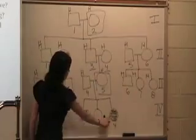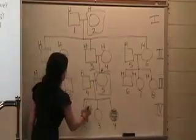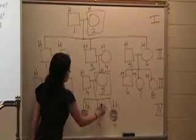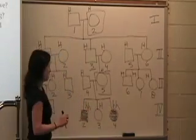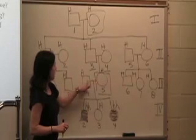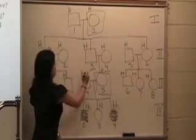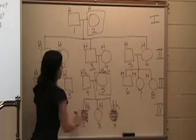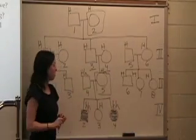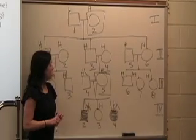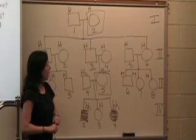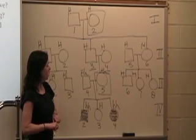Until we get to these two down here, which do display hitchhiker's thumb, so we know that they are homozygous recessive. If these two are homozygous recessive, we can work backwards and say that each parent had to be heterozygous in order to pass the little h onto this son and this daughter. So we know that in Generation 3, individuals 4 and 5 have to be heterozygous.